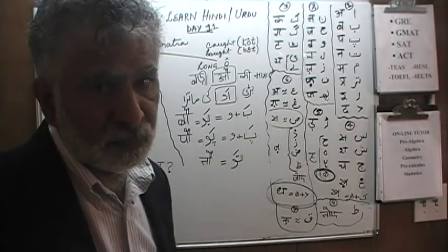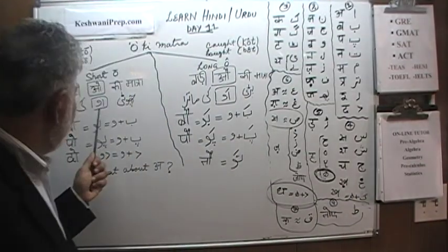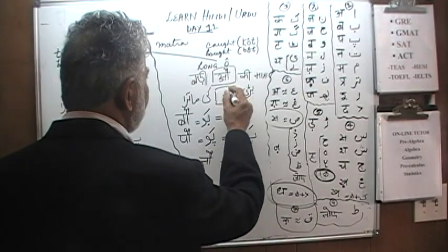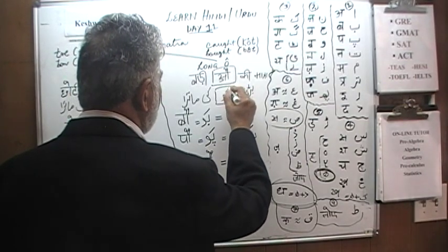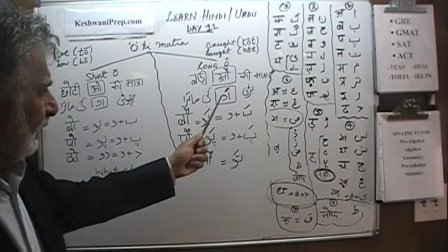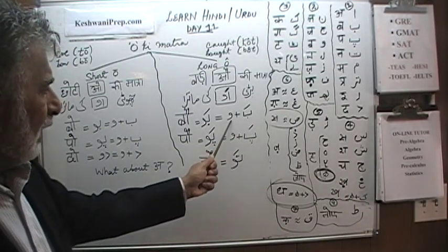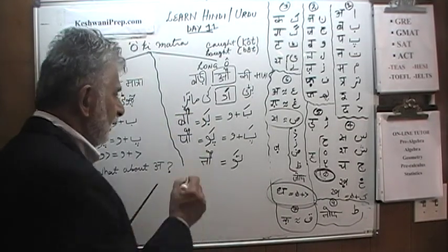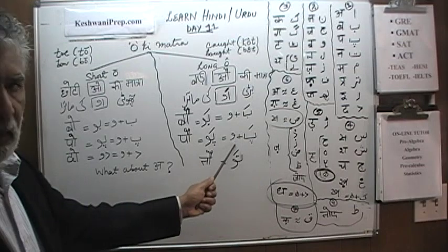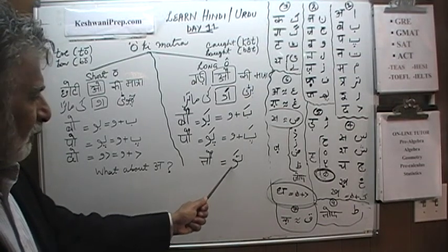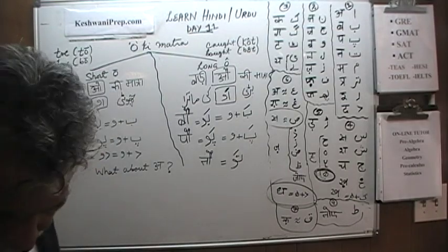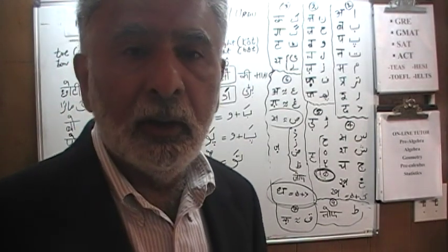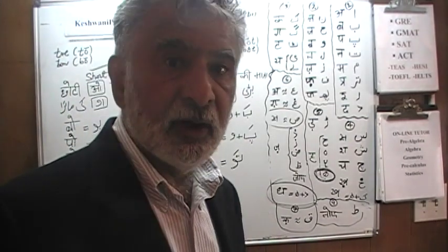What about Badi Oki Matra? Badi Oki Matra is also very straightforward. You do the same thing — you add the Wow — but in addition to Wow we have to add a symbol called Zabar on top of the letter. So Be Zabar and then Wow, when we join them, becomes Bo. Instead of one element it requires two. Similarly, Pe Zabar and the Wow will become Po. Te Zabar and the Wow will become To, and so on. This was a quick recapitulation of what we learned yesterday and the day before about Oki Matra. Now let's do some words.